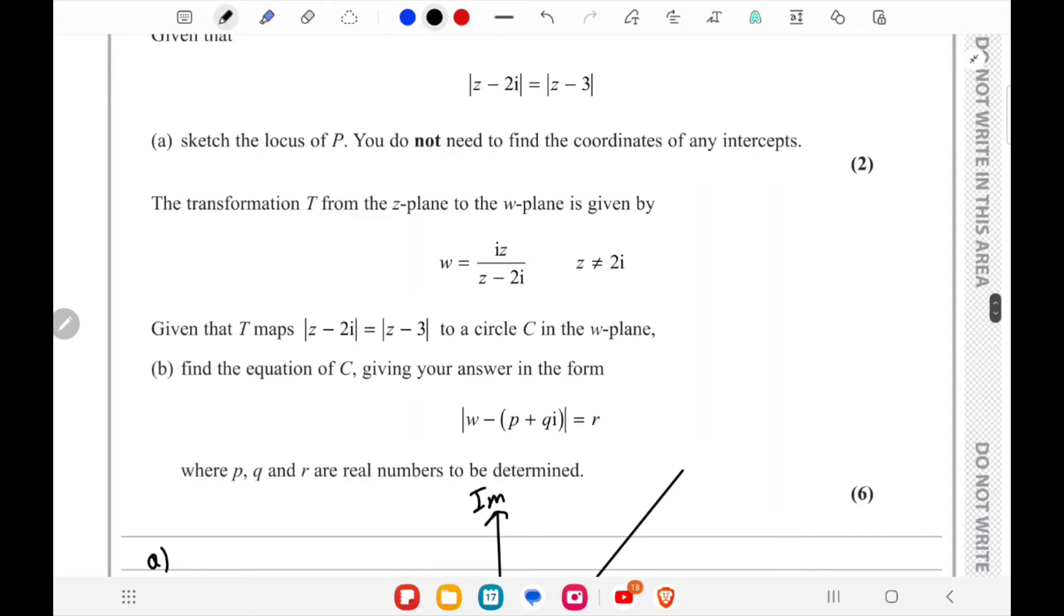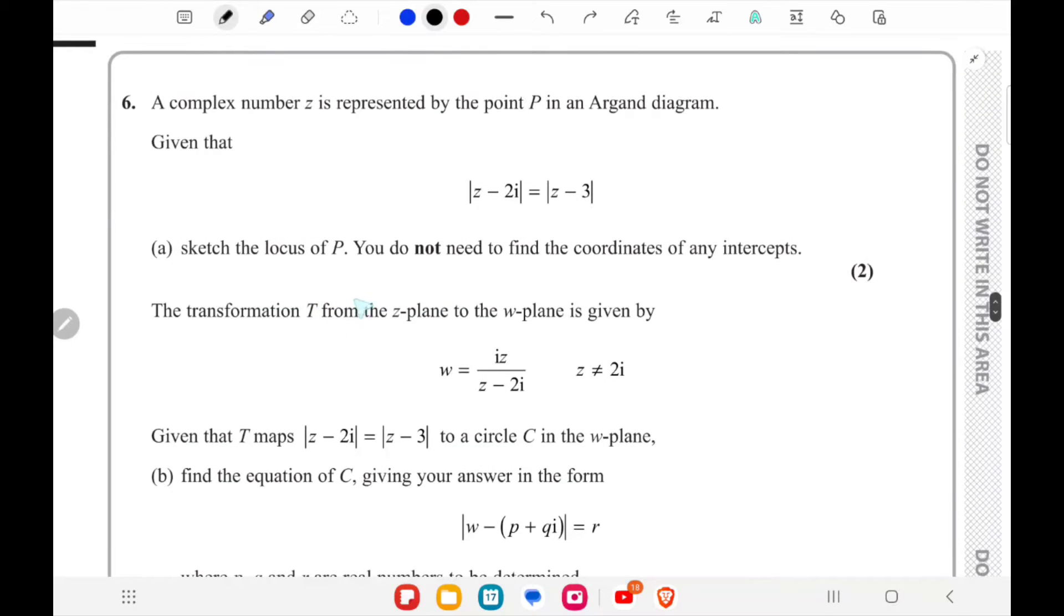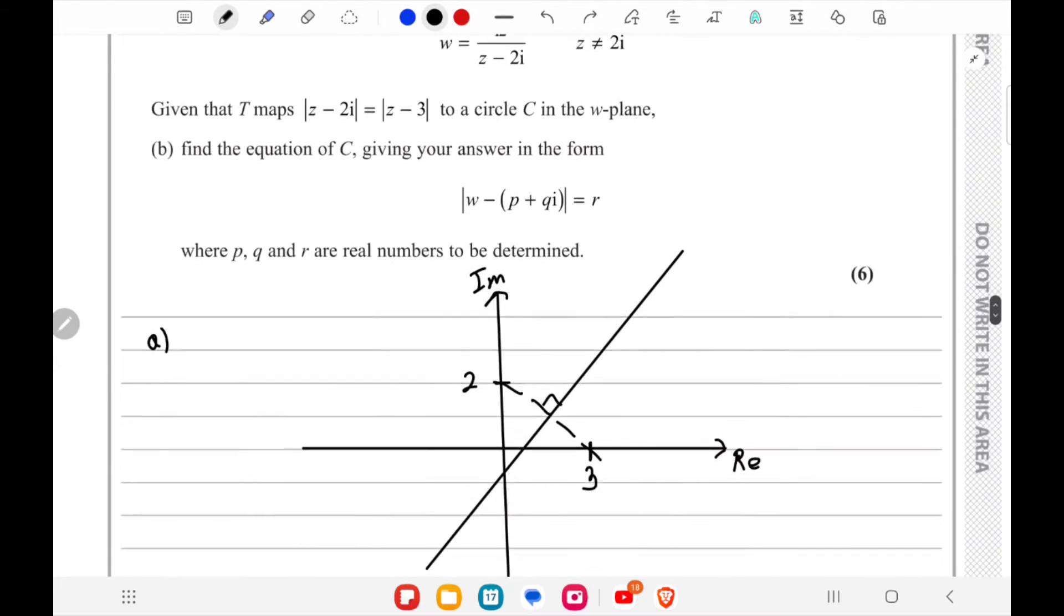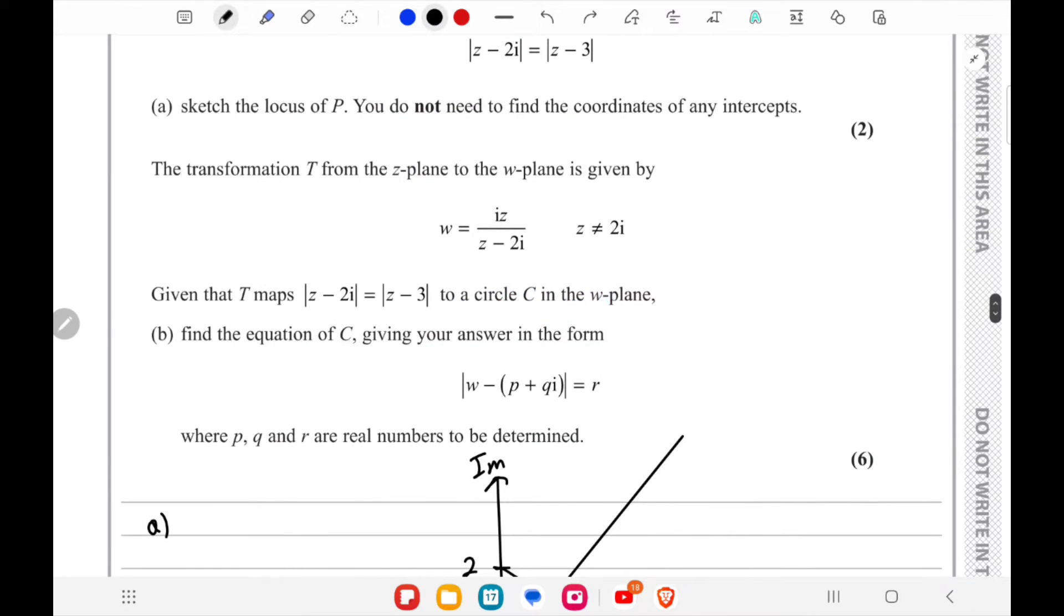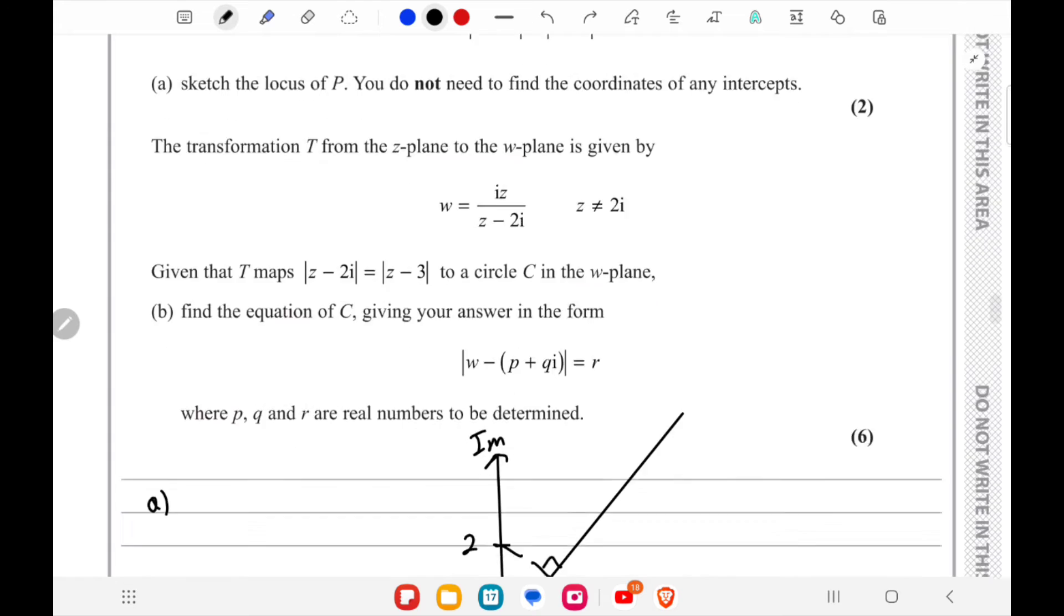In part B, we have to find the equation of C. The transformation T changes the z-plane to the w-plane, so we have an equation in the z-plane. This perpendicular bisector will become a circle in the w-plane, and we have to find the equation of the circle.